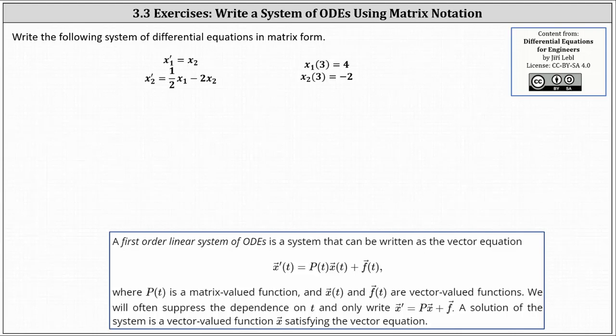Write the following system of differential equations in matrix form. We have x one prime equals x two, and x two prime equals one half x one minus two x two, with initial conditions x one of three equals four, and x two of three equals negative two.